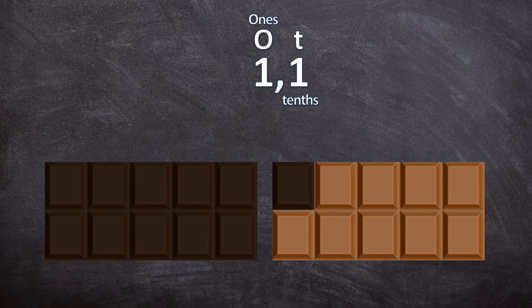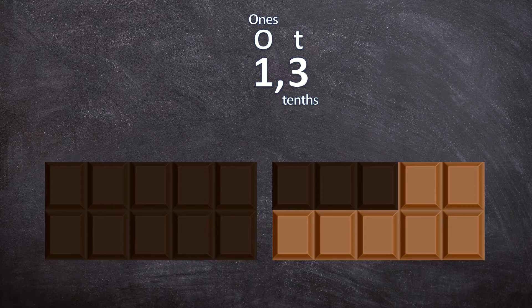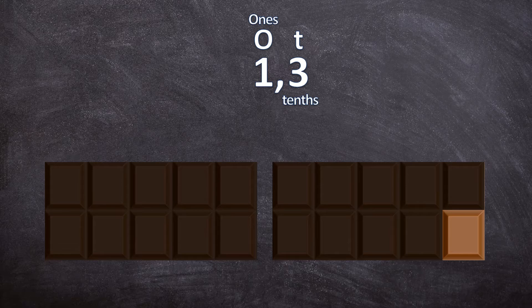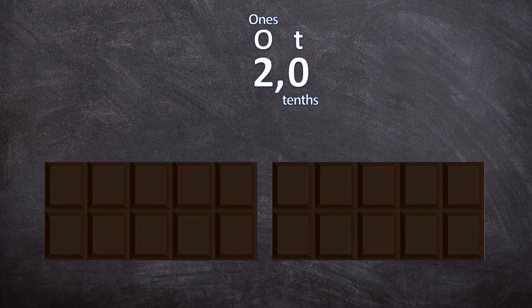We've eaten one whole chocolate and one tenth of the next piece. Now let's eat another piece — now we've eaten one whole piece and two tenths, so you write 1,2 or 1.2. If you eat another piece you have one whole and three tenths, and we can carry on like this until we've eaten one whole chocolate and nine tenths. When you eat that last block you've eaten two whole chocolates.